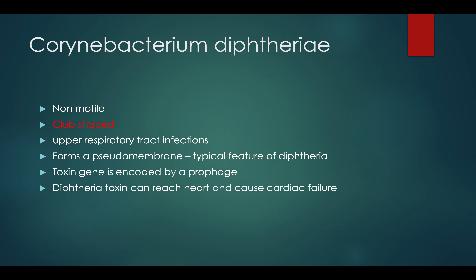In diphtheria, there's necrotic whitish to grayish slough-like tissue — that's the pseudomembrane. This can be fatal because if it grows in size it can block the airway. The toxicity of the bacteria is due to the diphtheria toxin. This toxin is produced because a bacteriophage gets inside the Corynebacterium diphtheriae, undergoes the lysogenic cycle, and encodes the toxin via a prophage.